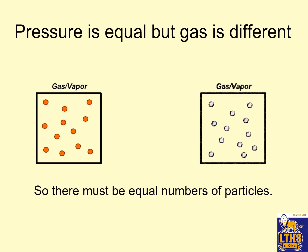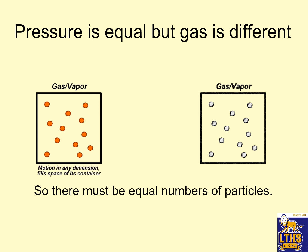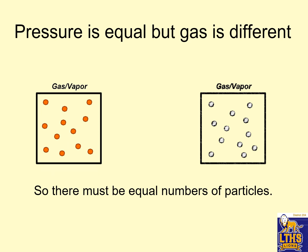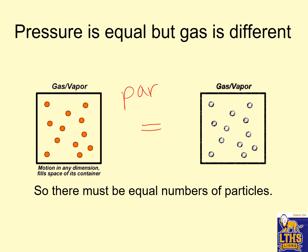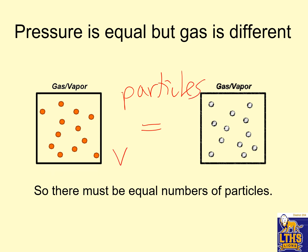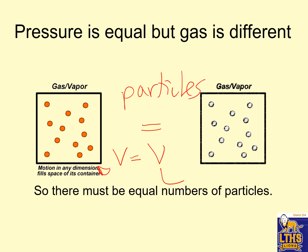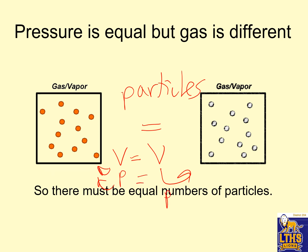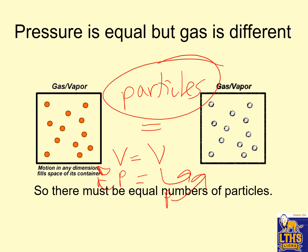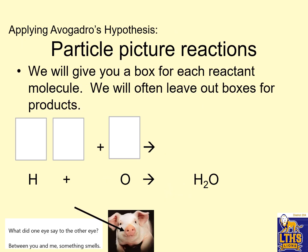So pressure is equal here. This is one gas and that's a different gas — same volume, same pressure means equal number of particles. Volume of that equals volume of that; pressure of that equals pressure of that, so that means same number of particles. That's Avogadro's hypothesis.